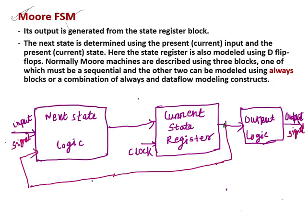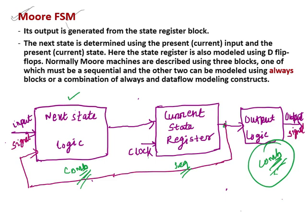We have three blocks. One is the next state logic, and this is a combinational block — it determines what will be the next state from the current state. This next state logic is a pure combinational circuit. The output logic is also a combinational block. The current state register is a sequential circuit — a memory element triggered with respect to the clock. As a whole, this FSM is a sequential circuit.